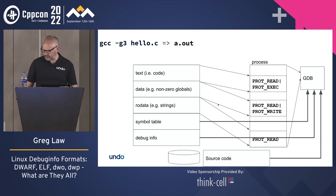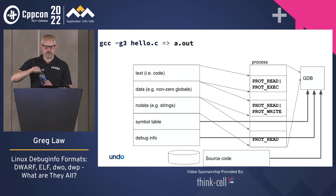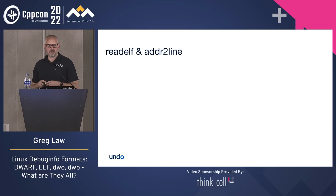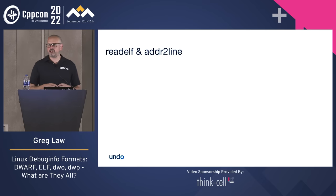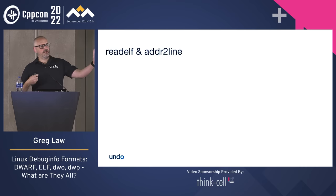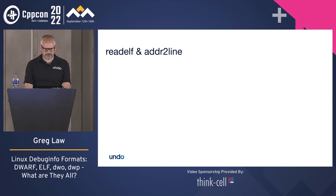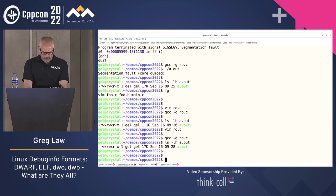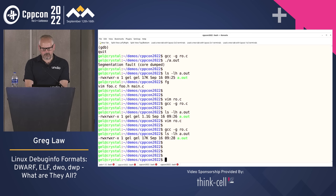Let's move on. readelf and addr2line. We looked at readelf a little bit already. addr2line does a little bit of the job of what GDB does: it takes your debug information and translates program counters to line number information. A little fiddly to use, but can be useful if you want a segv handler or abort handler and you want it to print a backtrace. There are all sorts of reasons you might want to map a program counter to a source line. Let's take an example — let's go back to our hello world example.